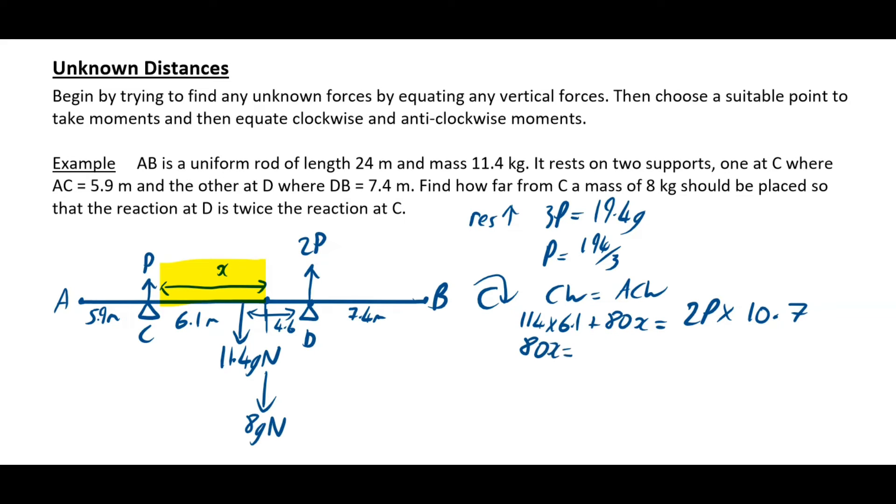So tidy this all up. I'm going to leave my 80X where it is. My 2P, so that's going to be 2 times 194 over 3, that's my P, and then that was times 10.7. And then I will take away my 114 times 6.1. All of that I would do in my calculator. And I did that, and I got 80X is equal to 688.4666 dot dot dot. And then divide across by 80, and I got 8.61 meters, and that was to two decimal places.